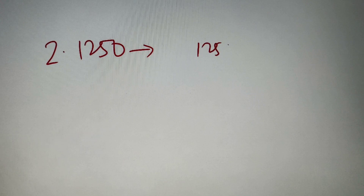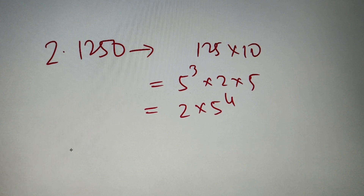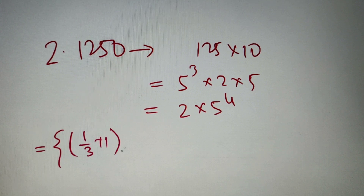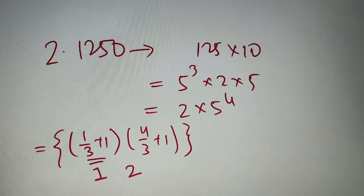For our next question we have to calculate the number of perfect cube factors of 1250. We prime factorize: 1250 equals 125 into 10, where 125 equals 5³ and 10 equals 2 × 5. So the prime factorization comes out to be 2¹ × 5⁴. Placing this in our formula: integer value of (1/3) + 1, times integer value of (4/3) + 1. The first value comes out to be 1 and the second value comes out to be 2. So the product is 1 × 2 = 2. The number of factors which are perfect cubes for 1250 is equal to 2.